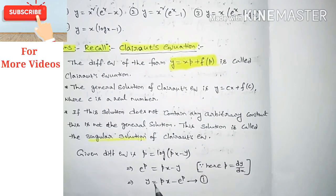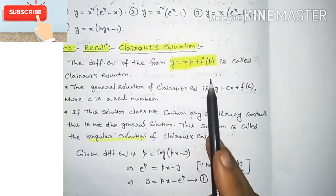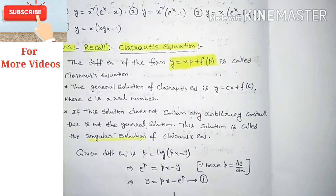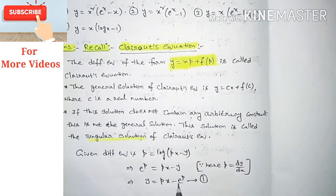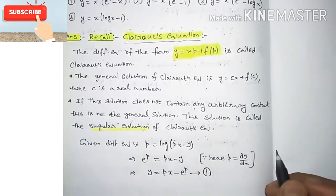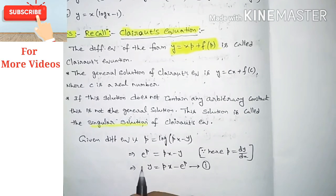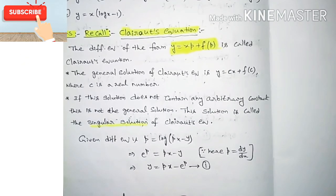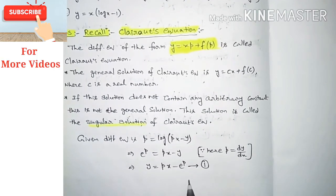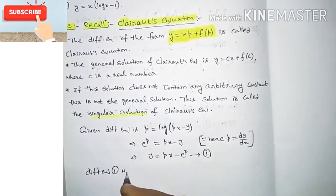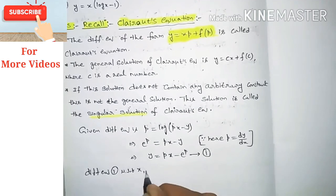Comparing equation one with Clairaut's equation y = xp + f(p), here f(p) is nothing but −e^p. So directly we get the general solution by taking p equal to an arbitrary constant c. But the question asks for the singular solution, so we differentiate equation one with respect to x.